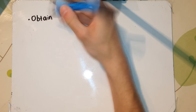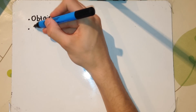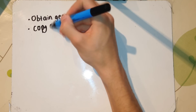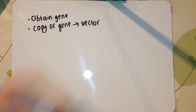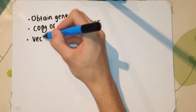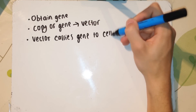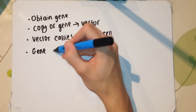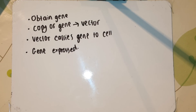The first part of genetic engineering really goes as follows. You obtain the gene you'd like to insert into an animal. You copy this gene using various methods, which we'll talk about in different videos, and insert this copy into a vector. The vector is then a way of transporting this gene into the cell, and once the gene is in the cell, the gene is expressed via protein synthesis.